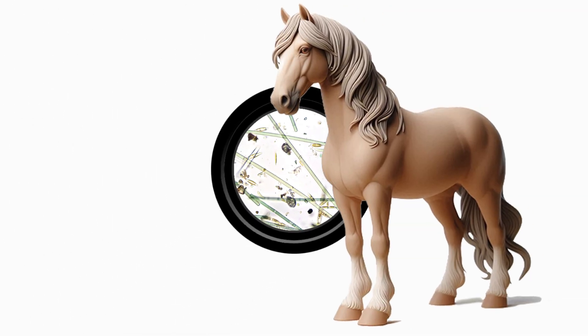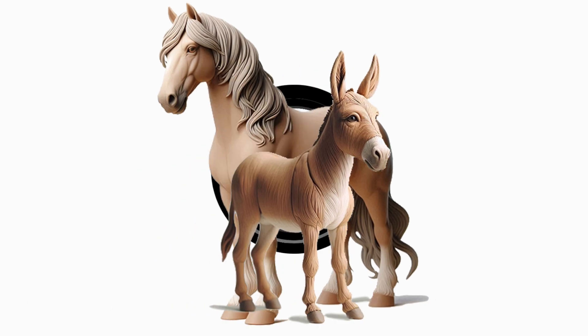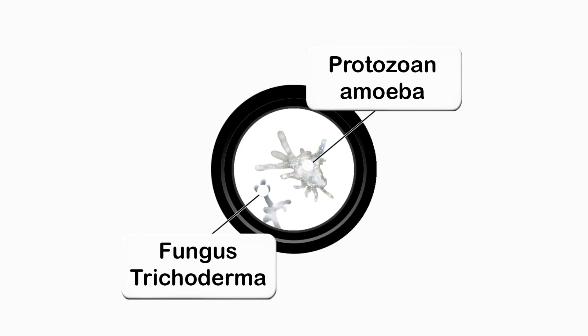In the macro world, if a horse looks like a donkey, they are most likely related. But in the micro world, appearances can be deceiving. Similar looking microorganisms might not be related at all.